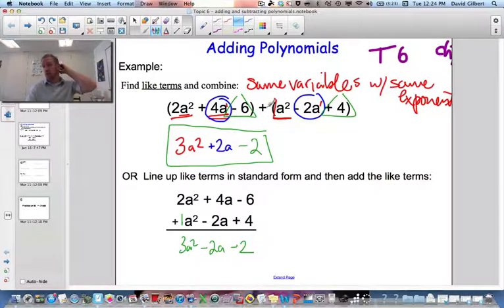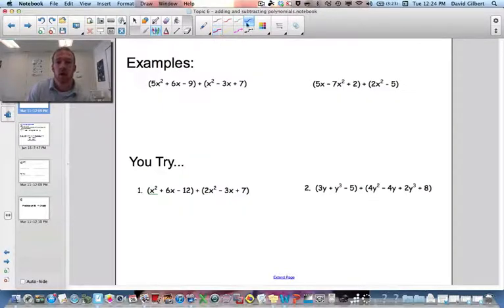Alright. So I'm going to try to go through this kind of quickly. For those of you that get it, if you're having trouble, make sure you just go back and pause it or rewind and watch it again. So here we have x², x². And it has to be the same variable and same exponent. So that gives us 6x².